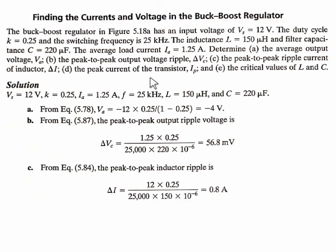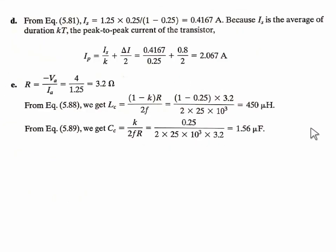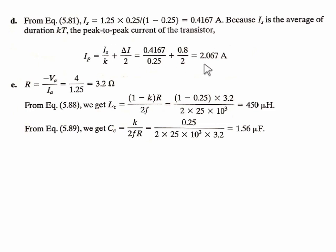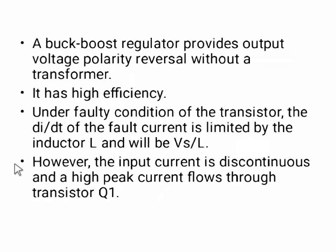The peak current in transistor Ip = Is/K + delta_I/2. The input current Is = Ia·K/(1-K) = 1.25 × 0.25/0.75 = 0.4167 A. So the peak transistor current Ip = 0.4167/0.25 + 0.8/2 = 2.067 A. The output current is 1.25 A but the peak transistor current is 2.067 A — a high value, which is a disadvantage of the buck-boost converter.